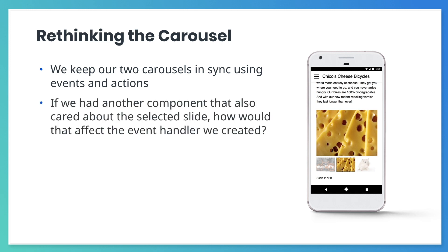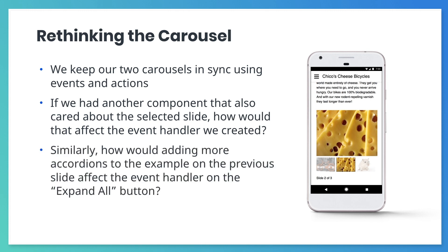Now what if we add another component that should also be updated when a new slide is chosen? Suddenly, our event handlers have several actions each. What if we want to add more accordions to the expand-all section from the previous example? Every new accordion would have to have a new action.